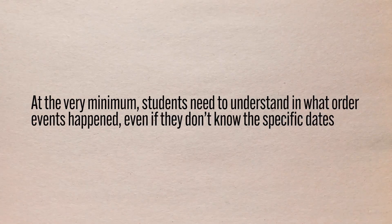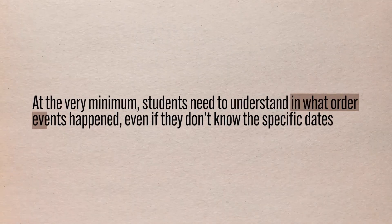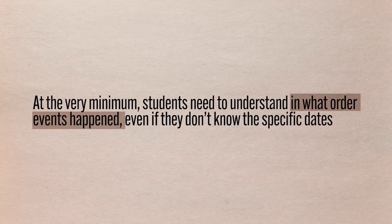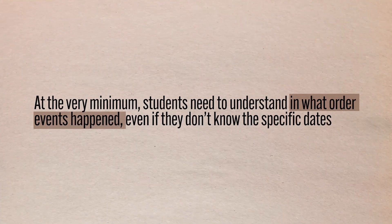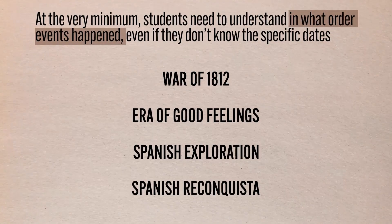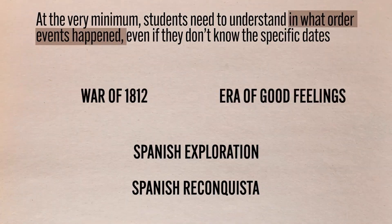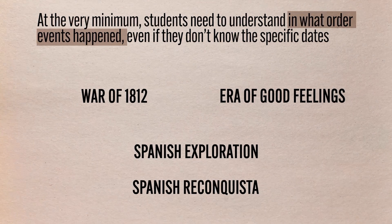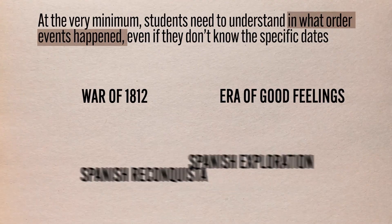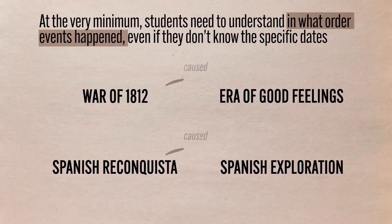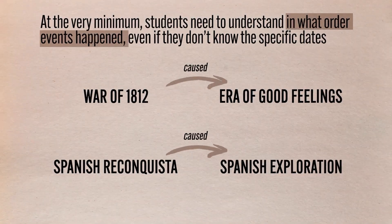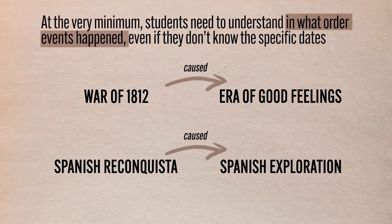At the very minimum, students need to understand in what order events happened, even if they don't have the specific dates. For example, they have to know that the War of 1812 preceded the Era of Good Feelings, or that the Spanish Reconquista preceded Spanish exploration. Both of those prior events were causative factors in the latter events, and if they're writing or doing multiple choice, they need to know at minimum which preceded which so they can demonstrate their historical thinking.